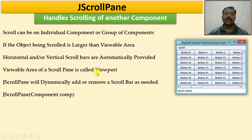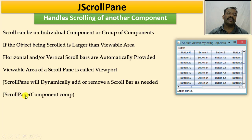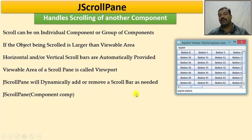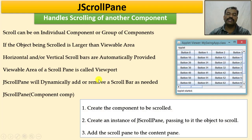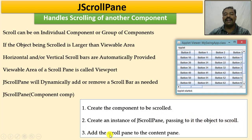The viewable area of the scroll pane is called the viewport — whatever component I am viewing right now is the viewport, and as I scroll the viewport changes. JScrollPane is the constructor I use when adding a component I want to scroll. The steps are: create the component to be scrolled, create an instance of JScrollPane passing the object to scroll as a parameter, and add the scroll pane to the content pane.